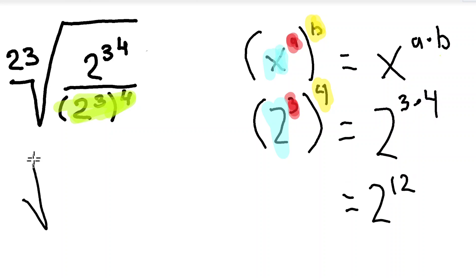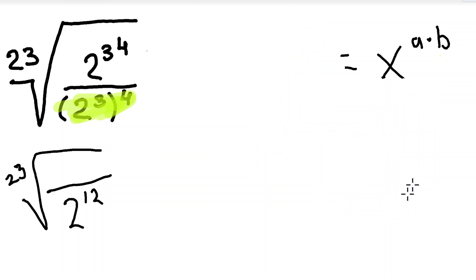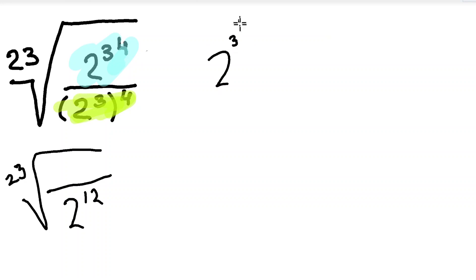Now let's rewrite our equation with what we already know. The denominator is 2 to the power of 12. Next, we're going to work with the numerator. The numerator in light blue — as you can see, there are no parentheses in this term, which means we do not apply the power-of-power rule the same way. In this case, we do the exponents first.